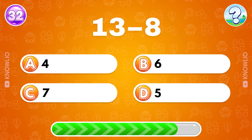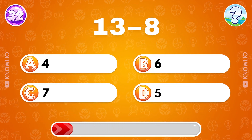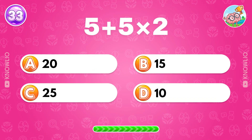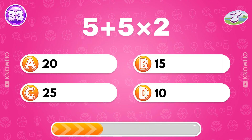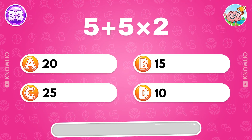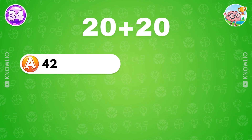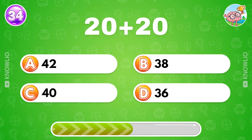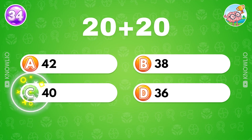What's the result of 13 minus eight? Answer D: 5. Hard one: five plus five multiplied by two? Answer B: 15. 20 plus 20? Answer C: 40.